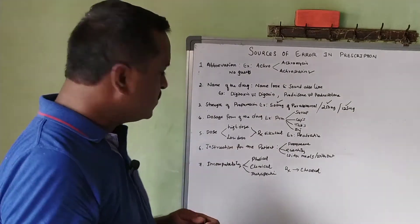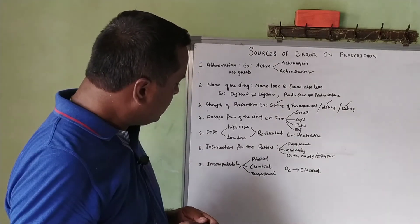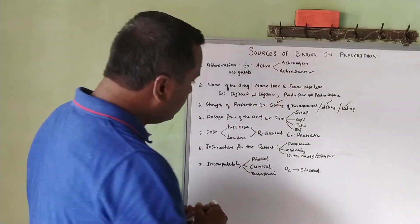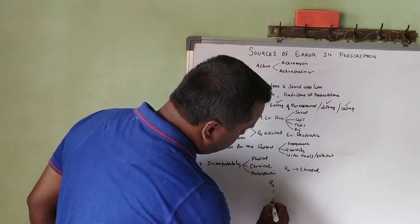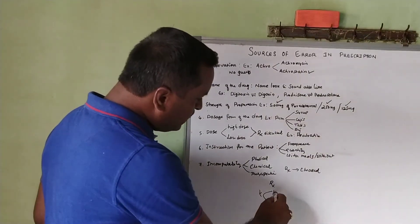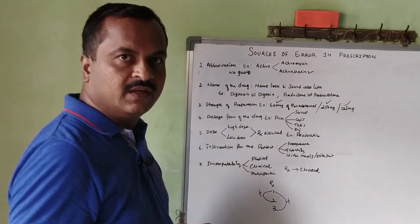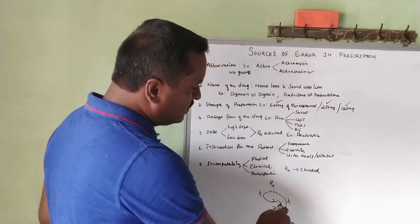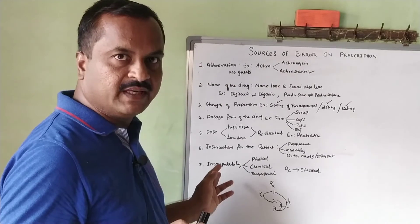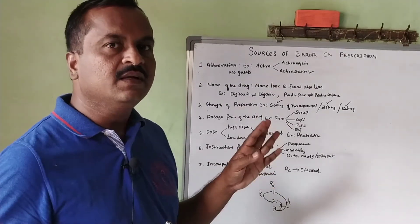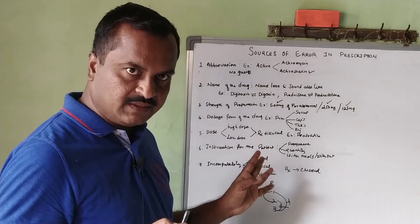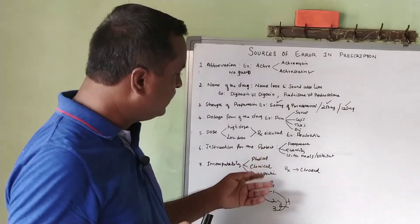The seventh error is incompatibility. Compatibility means suitable; incompatibility means not suitable. If a prescription contains two or more ingredients — for example drugs 1, 2, and 3 — and drug 1 interacts with drug 2, it should not be prescribed together. The pharmacist must interact with the physician to clarify any incompatibility, whether physical, chemical, or therapeutic, and substitute an alternative ingredient to minimize the error.